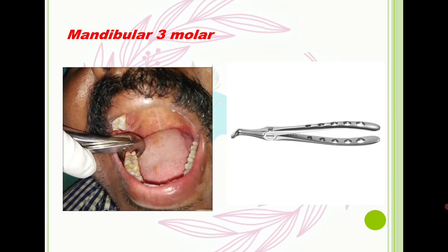The last type is the mandibular third molar forceps. The working part is the same, but like the maxillary third molar forceps, it has a longer handle which helps us better reach and extract the third molar.